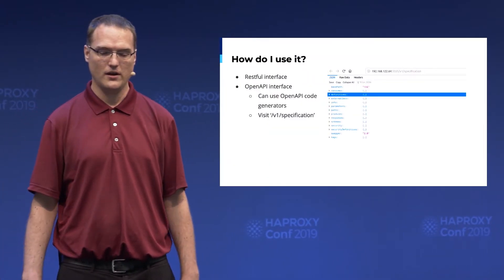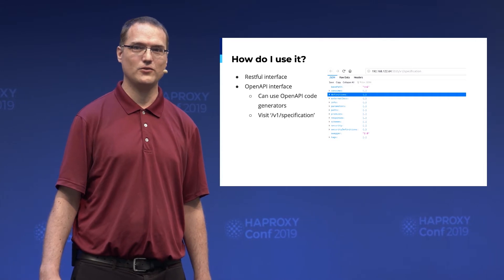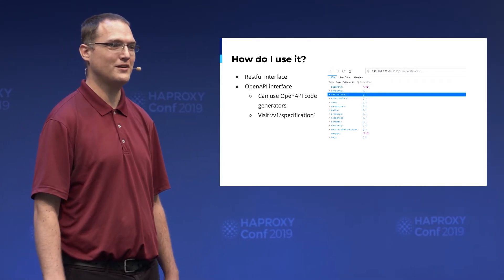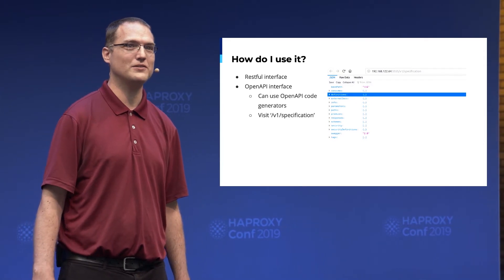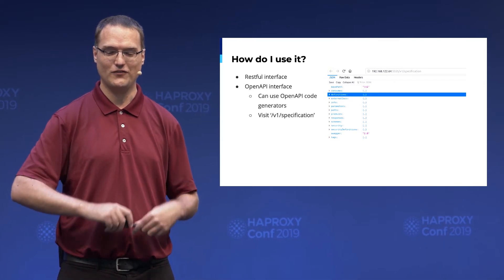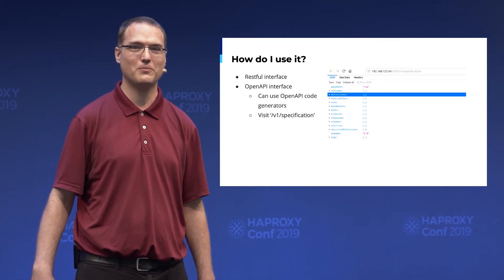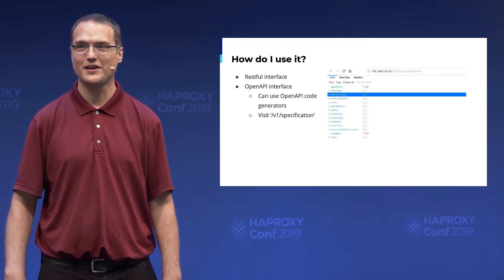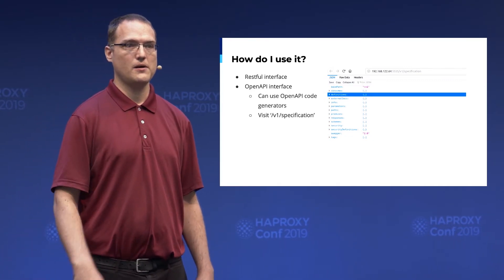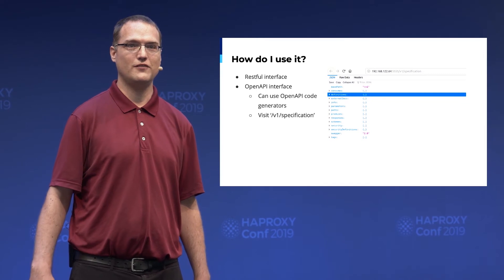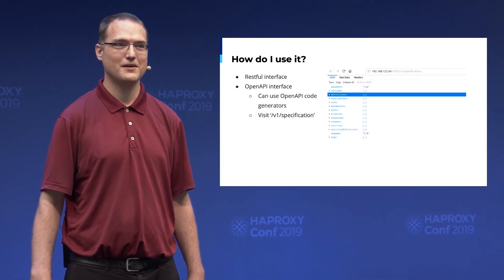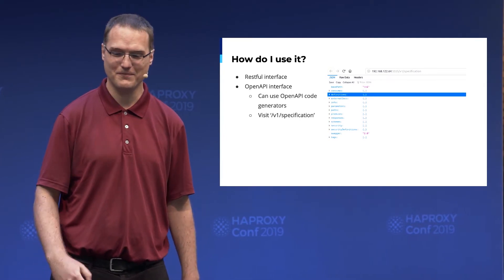It's pretty simple. I would not recommend using the /v1 specification to figure out how to use it — the documentation is far better. But you can visit the v1 specification to get a JSON output, which if you open in Firefox will give you a nice tree of the various endpoints you can call. If you open it in Chrome you'll get three pages of JSON, which will make you not want to use it. So don't do that.